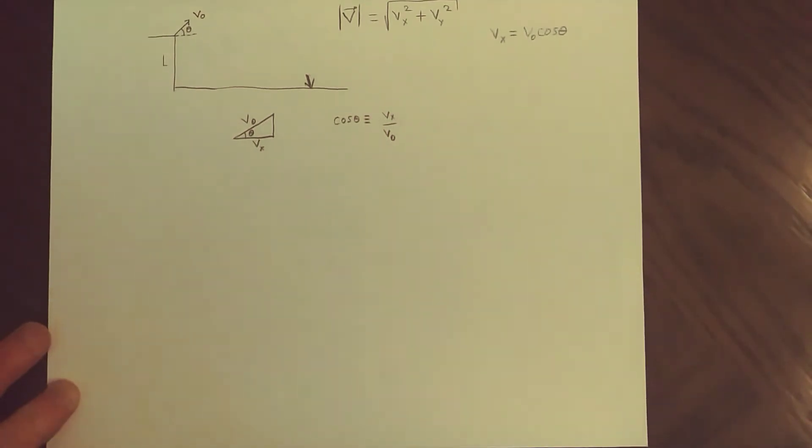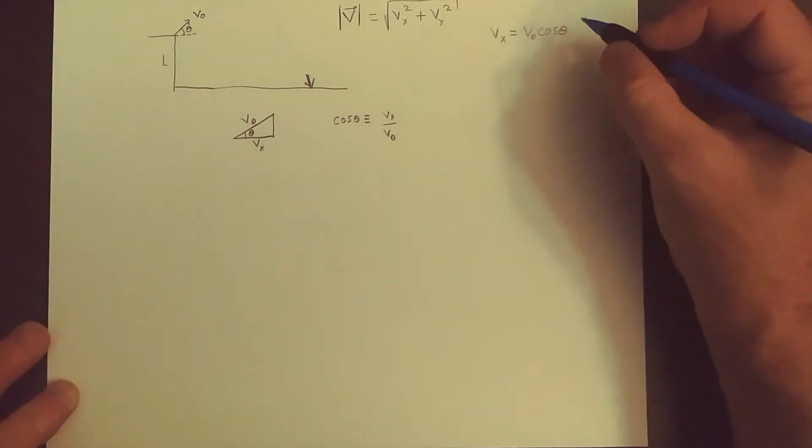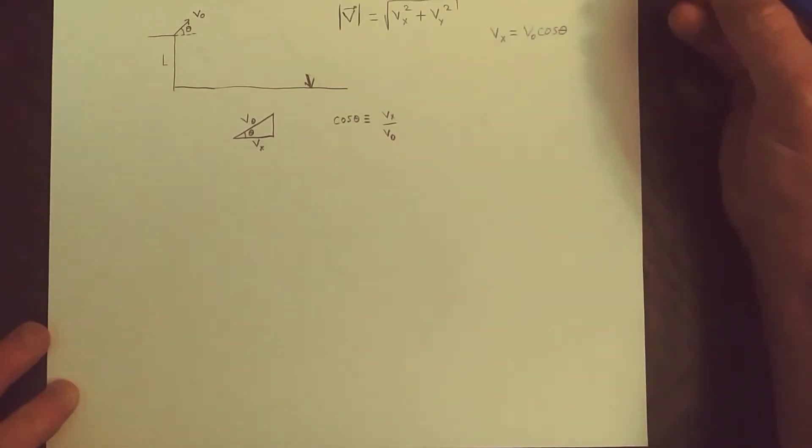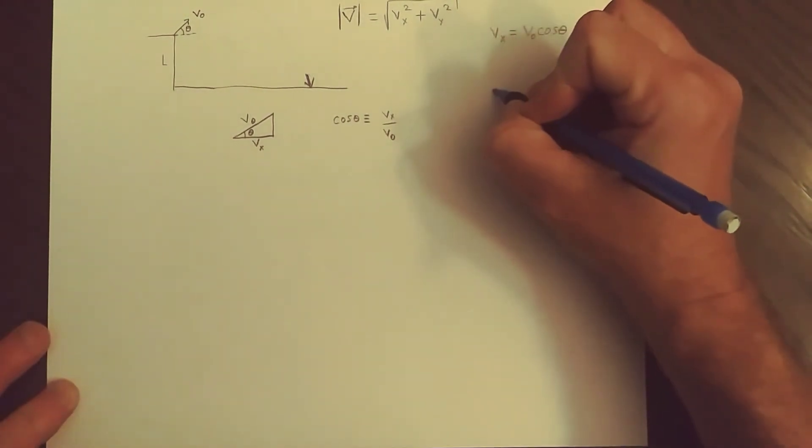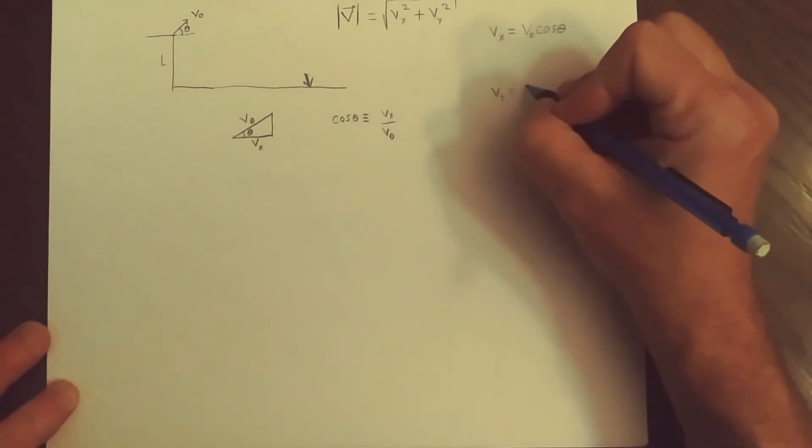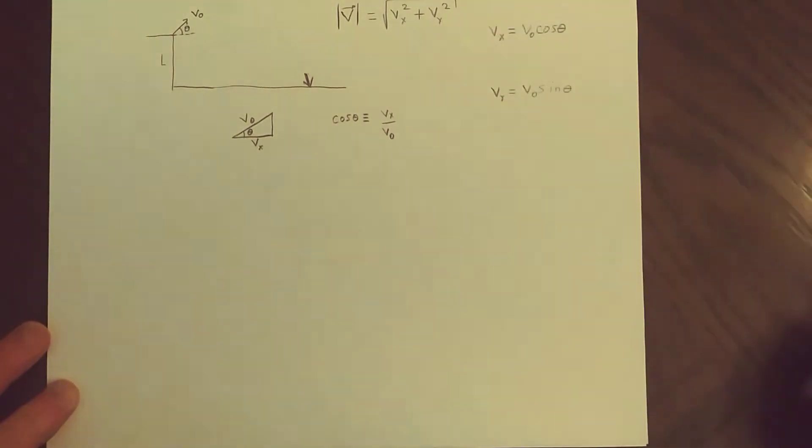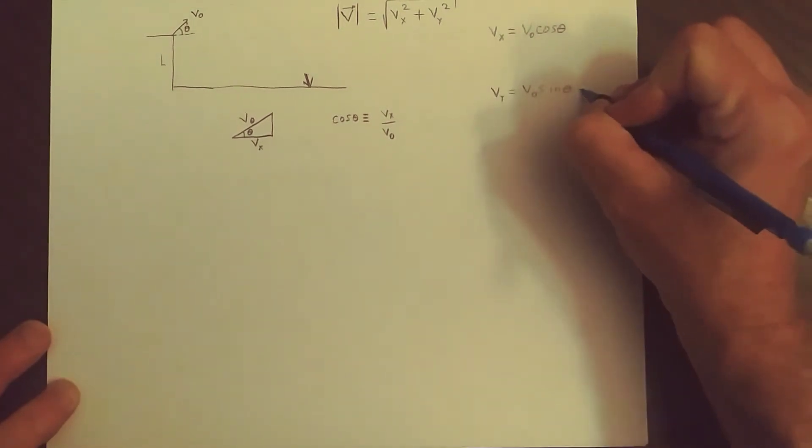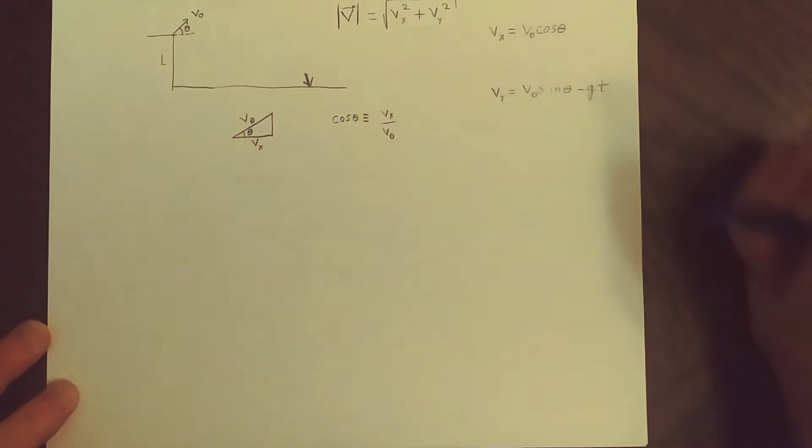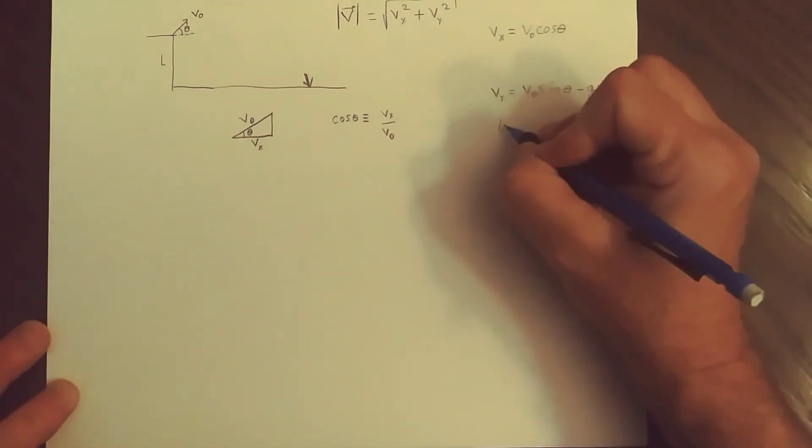So by definition from the definition of the cosine, V_X becomes V naught cosine of theta. There's no acceleration in the horizontal direction so that equation doesn't change. Let's look at V_Y. In this case we have just the other trig function so it's V naught sine of theta.